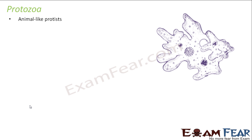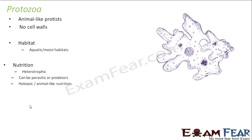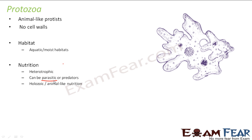Protozoa do not have cell walls. When you talk about their habitat, they have aquatic or moist habitats. Their nutrition is heterotrophic because they do not have chlorophyll and cannot perform photosynthesis — they are not autotrophs. They depend on others for their food. They can be parasitic, meaning they live inside the body of another living organism and derive nutrition from it, or they can be predators, meaning they catch prey and ingest it directly.